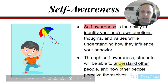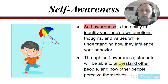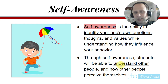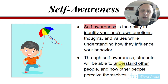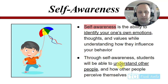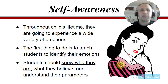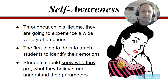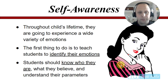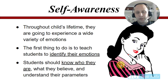Self-awareness overall is the ability to identify your own emotions, thoughts, and values while understanding how they influence your own behavior. It's really knowing how they influence your behavior. Through self-awareness, students will be able to understand other people and how other people perceive themselves. Throughout a child's lifetime they're going to experience a wide variety of emotions each day. The first thing you have to do is teach students to identify their own emotions — students should know who they are, what they believe, and understand their parameters.